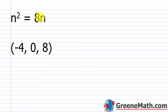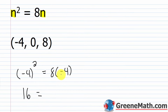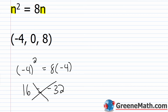Now we have n squared equals 8n, with proposed solutions negative 4, 0, and 8. Starting with n equals negative 4 — I plug that in everywhere I see an n. I put parentheses around negative 4 and square it, so I have (negative 4) squared equals 8 times negative 4. Using parentheses is very important here because I have a negative number raised to a power. Negative 4 squared is positive 16, and 8 times negative 4 is negative 32. 16 does not equal negative 32, so negative 4 is not a solution.